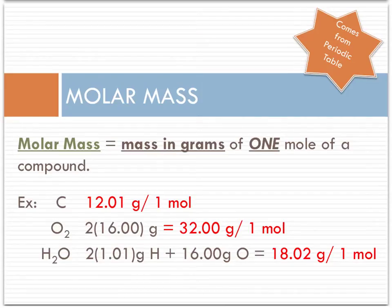In order to complete some of these stoichiometrical problems, you need molar mass. Molar mass is the number that we get from the periodic table. It's the mass in grams of one mole of a compound. It is expressed to the nearest hundredth. Here are some examples.